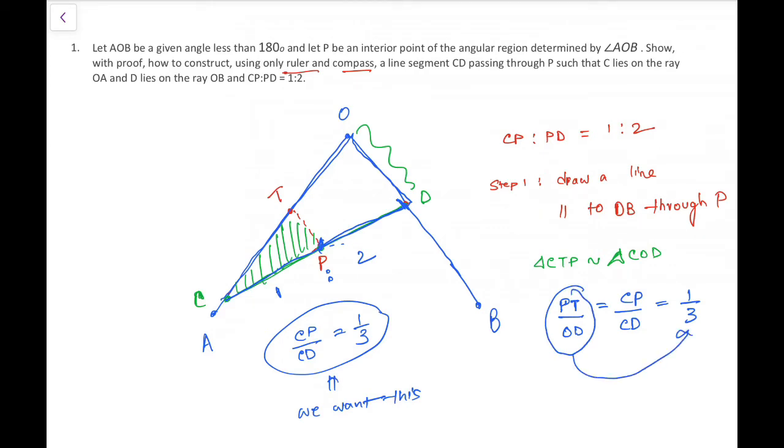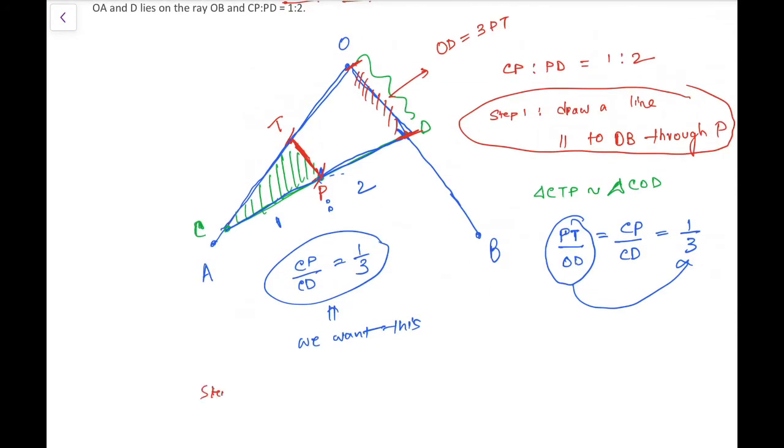We have already constructed PT which is parallel to the line OB, and now we will cut off a length OD on OB such that OD is 3 times PT. So that's step 2: cut off OD along OB such that OD is 3 times PT.